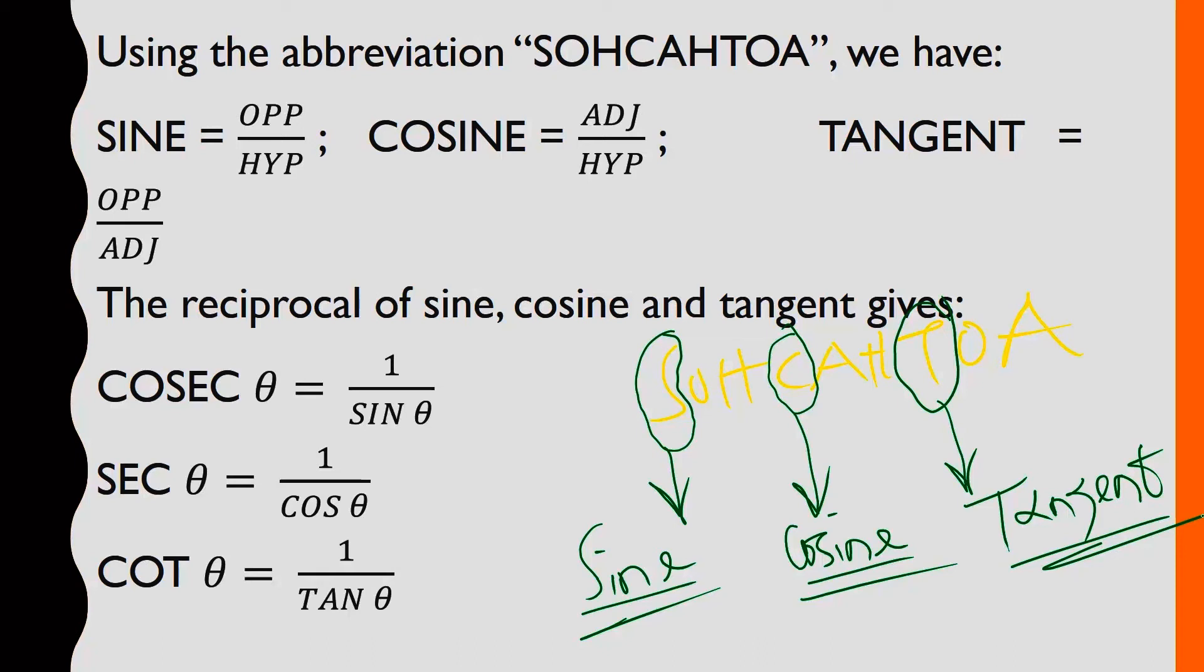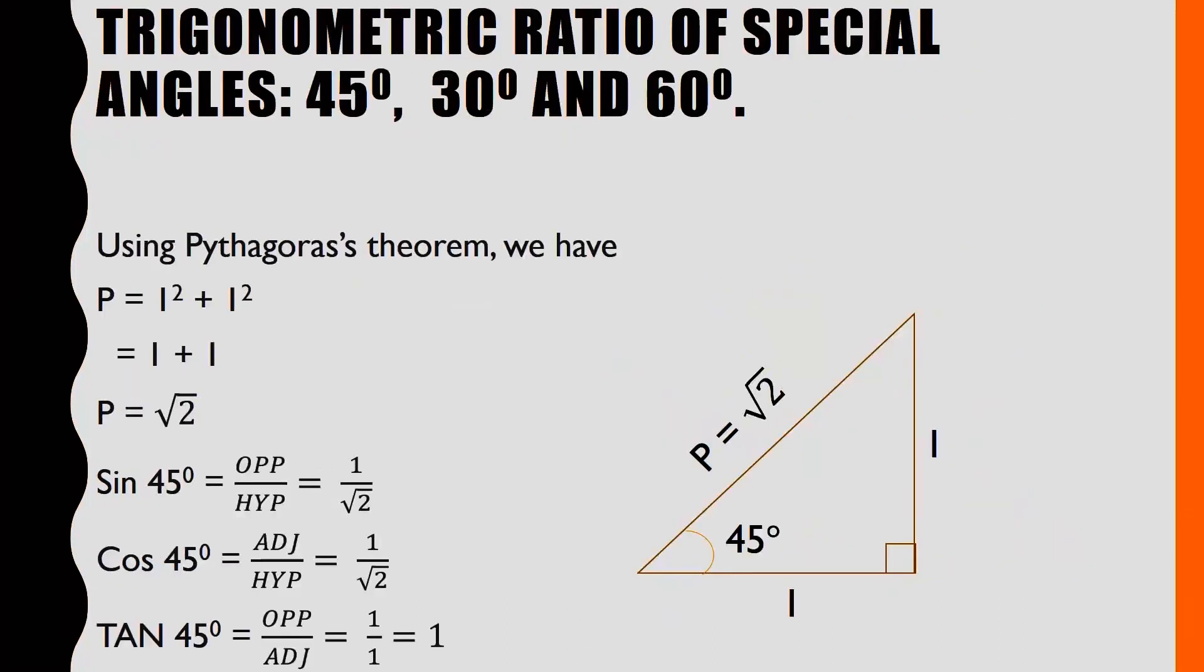To get sine in a given right angle triangle, all you need to check is opposite over hypotenuse. If you know your opposite and hypotenuse, if you divide these two, you get your sine θ. As for the cosine, you look at your adjacent with respect to the hypotenuse side, which is adjacent over hypotenuse, as indicated in the abbreviation. To get the tangent, tan θ, it will be opposite relating with the adjacent, which is opposite over adjacent.